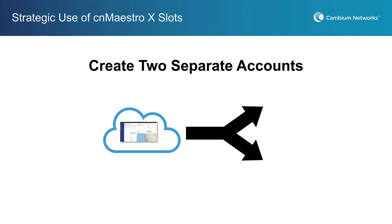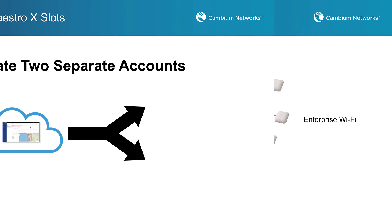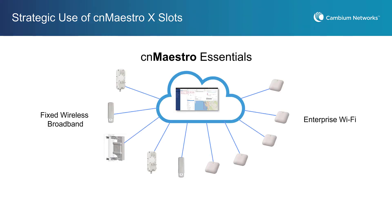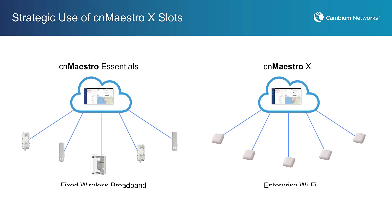One approach to situations like these is to create two accounts — one that remains on CNMeisterOx Essentials and one that is upgraded to CNMeisterOx. For example, you could put all of your Wi-Fi 6 and CNPilot devices into a CNMeisterOx account, and put your fixed wireless point-to-multipoint and backhaul devices into a separate CNMeisterOx account.